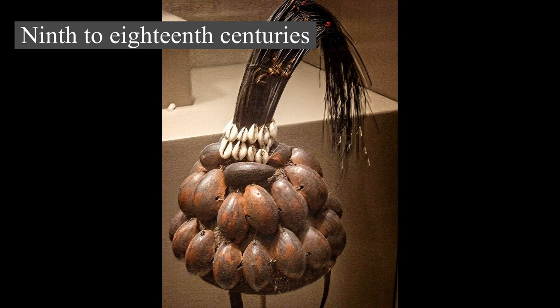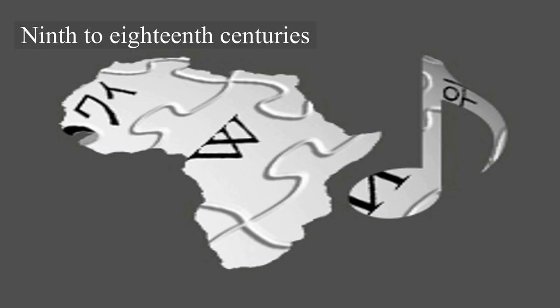By the 11th century, some Hausa states such as Kano, Jigawa, Katsina, and Gobir had developed into walled towns engaging in trade, servicing caravans, and the manufacture of goods. Until the 15th century, these small states were on the periphery of the major Sudanic empires of the era, paying tribute to Songhai to the west and Kanem-Bornu to the east.